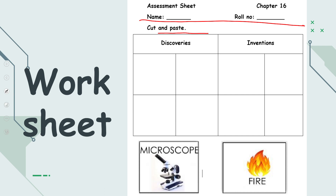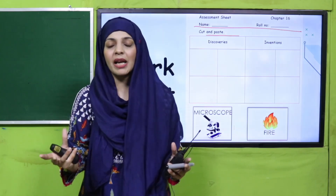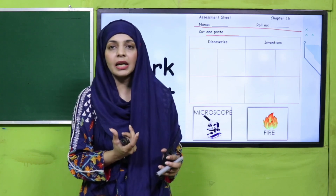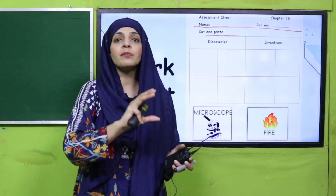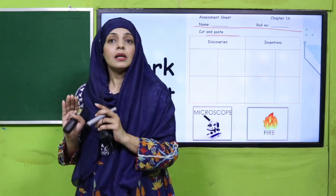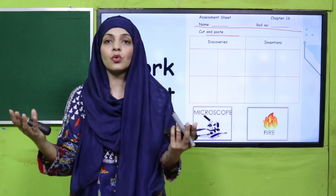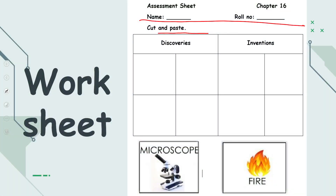First, understand the difference between invention and discovery. An invention is the creation of something that did not previously exist — you create it for your convenience. A discovery is finding something that already exists in the world but was unknown to people until it was discovered. Invention: something new that didn't exist before. Discovery: something that already existed but was found/revealed.